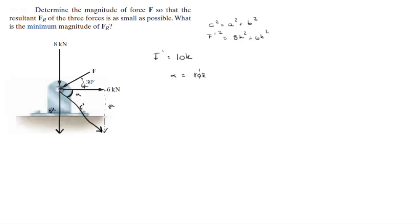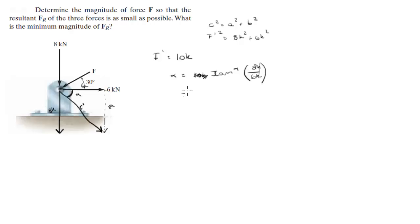You just do tangent inverse of y over x, which will be 8k over 6k. The k's cancel out of course, and this is going to give you an angle of 53.13 degrees.